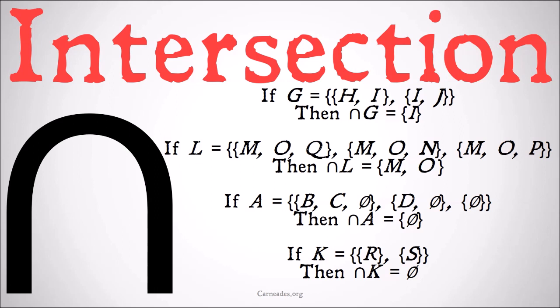If A is defined as the class of the class {B, C, ∅}, the class {D, ∅}, and the class {∅}, then the intersection of A is equal to the class of the null set, because the null set is the only common member to all three classes. If K is equal to the class of the class {R} and the class {S}, then the intersection of K is the null set, because there are no members shared by both members of K. All of this assumes that all variables are independent of each other and not equal to the null set.